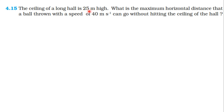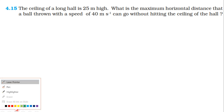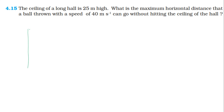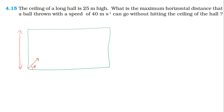Next question: The ceiling of a long hall is 25 meters high. What is the maximum horizontal distance that a ball thrown with a speed of 40 meters per second can go without hitting the ceiling of the hall? The maximum horizontal range formula is u² sin2θ / g. For maximum range, sin2θ equals 1, giving θ equals 45 degrees.